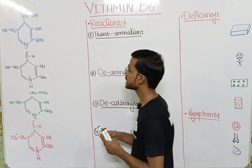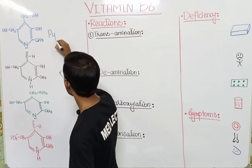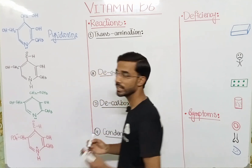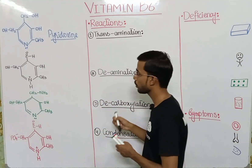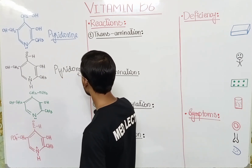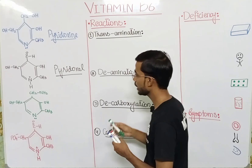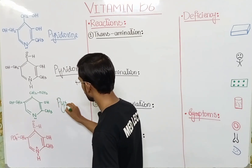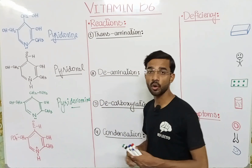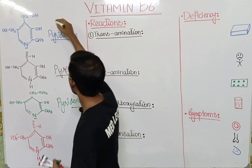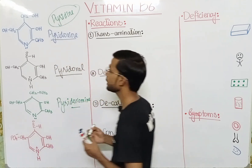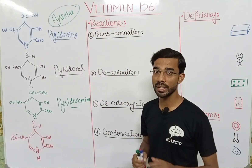The first compound found in Vitamin B6 is Pyridoxine. These are basically the four compounds that are actually found in Vitamin B6.